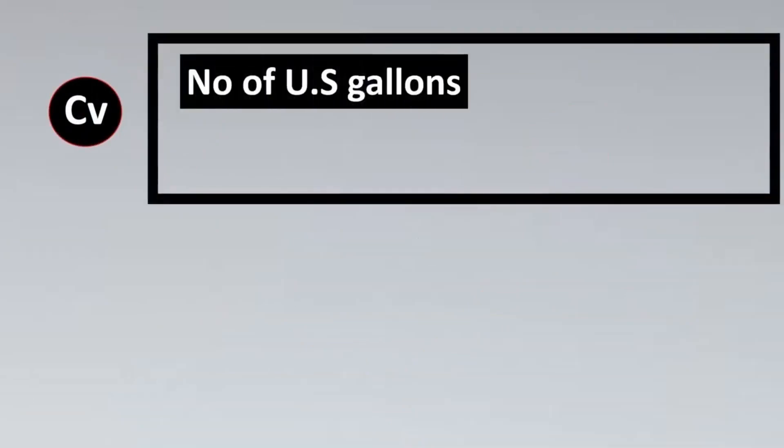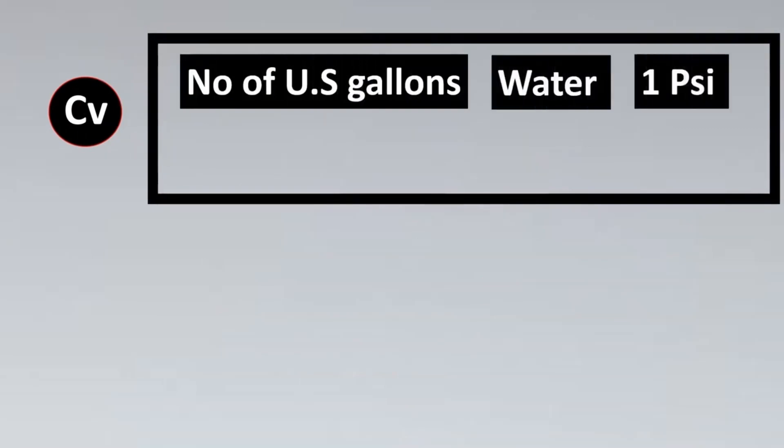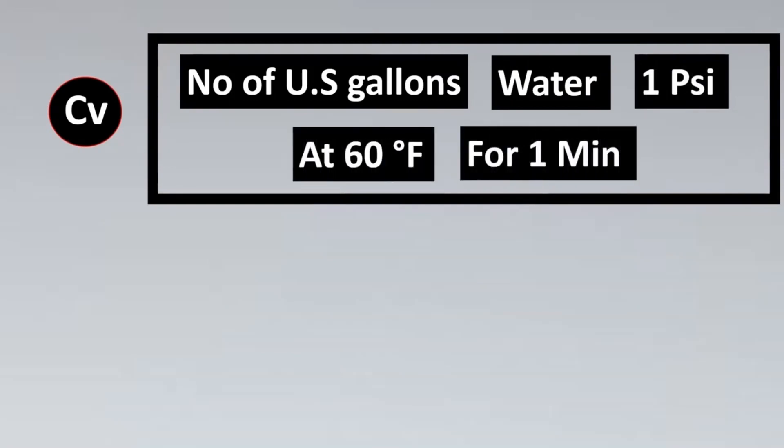So we will have three standard parameters which is the PSI drop is 1 PSI, the water is the fluid which is taken, and the temperature is 60 degree Fahrenheit. That being the case we can say the definition of CV is as follows: CV is the number of US gallons of water that can flow through a valve with 1 PSI pressure drop at 60 degree Fahrenheit for 1 minute.